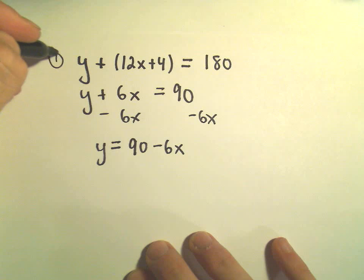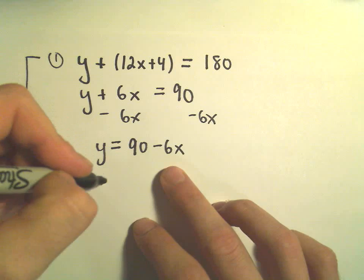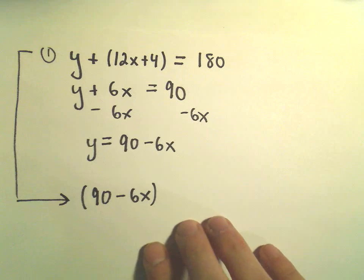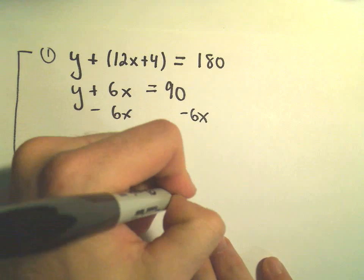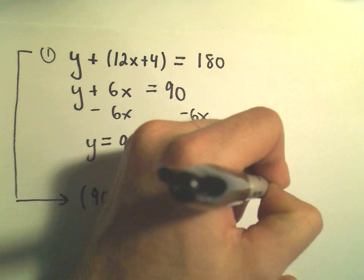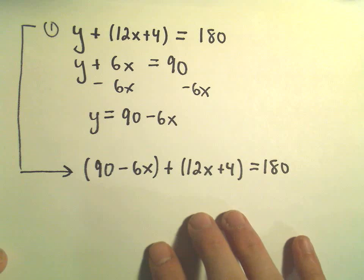So that will give me y equals 90 minus 6x. And now I'm just going to take my first equation, and I'm simply going to plug in the fact that y is equal to 90 minus 6x, plus we've got 12x plus 4 equals 180.